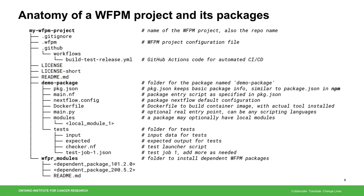Here's the directory layout of a WFPM project and its packages. The name of the project, 'my WFPM project', is also the name of the source code repository. The dot WFPM file keeps the project configuration. GitHub Actions code for automated continuous integration and continuous delivery is generated automatically when the project is created. This enables automated testing and package releasing. In the package, there's a pkg.json file that keeps basic metadata. Then there's a workflow script to provide the entry point of the package. A Dockerfile is used to create the associated container image. The test directory contains a checker script that launches test jobs. The WFPR modules directory is for installing dependent packages.